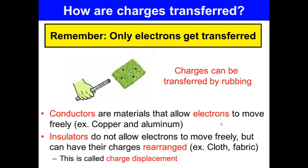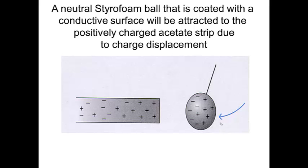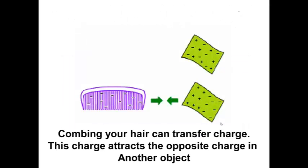When charges are rearranged, this is called charge displacement. A neutral styrofoam ball that is coated with a conductive surface will be attracted to a positively charged acetate strip due to charge displacement. So acetate is just overhead projector plastic. Combing your hair can transfer charge. This charge attracts the opposite charge in another object. So the comb gains electrons from your hair, and it attracts the cloth due to charge displacement.